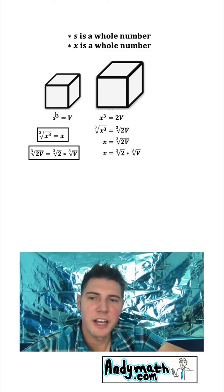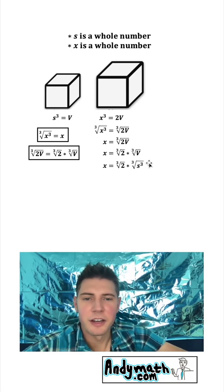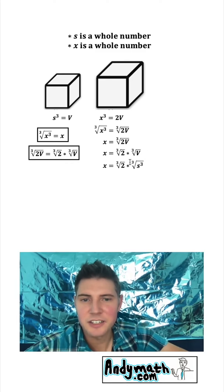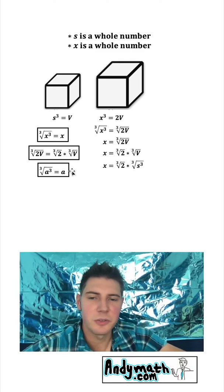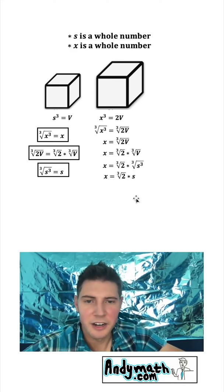Next, this v right here we know is s cubed. So I'm going to plug in s cubed for the v. And then we'll bring down everything else. Now we have another situation where the index of the root is equal to the exponent. Here it is right here where the b is 3 and the a is s. So we know this thing right here changes into s. We'll bring down everything else.